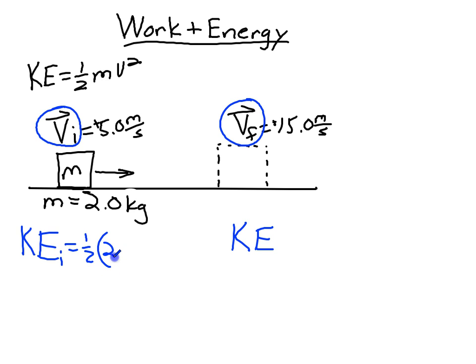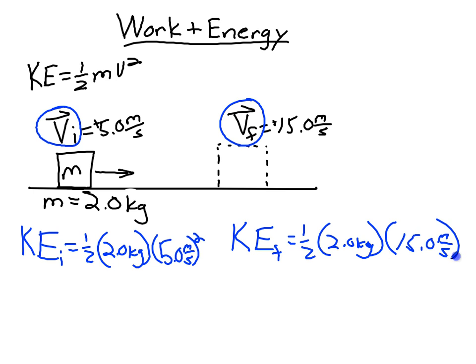So the initial kinetic energy, 1/2 the mass times the velocity squared, 5.0 meters per second squared, and the final is going to be 1/2 the mass, 2.0 kilograms, times 15.0 meters per second squared. So now you have to do those calculations. Our first one is fairly simple. 1/2 of 2 is 1, and 1 times 5 squared would be 25. So the kinetic energy initially is 25 joules.